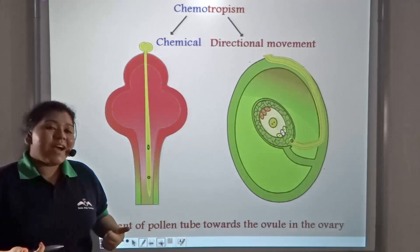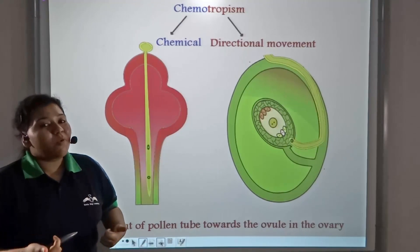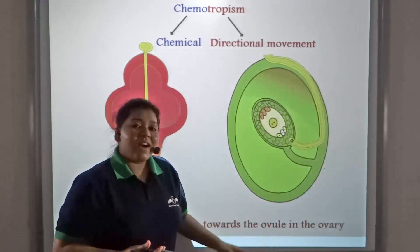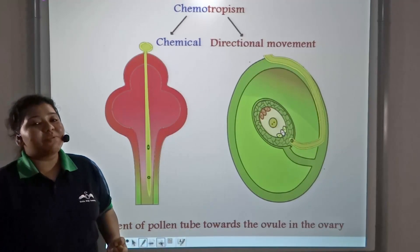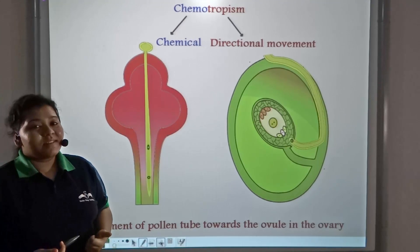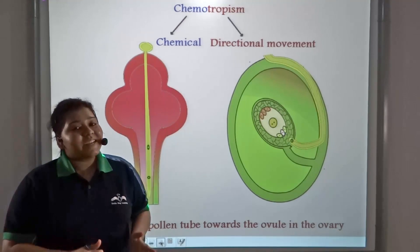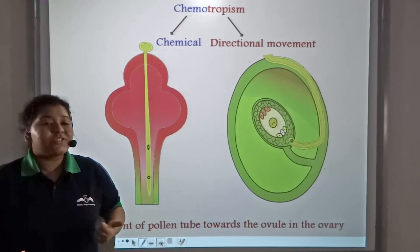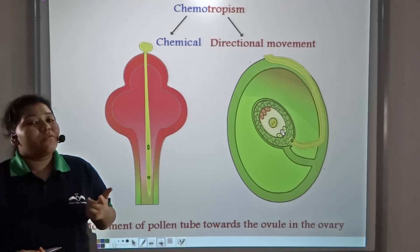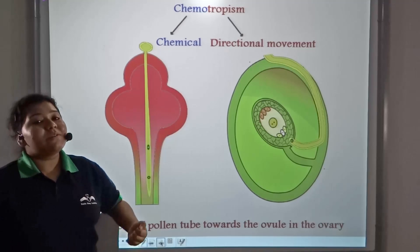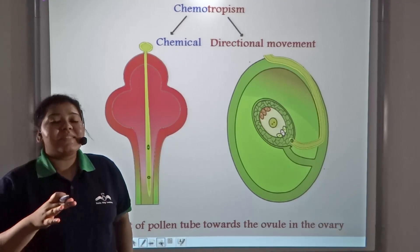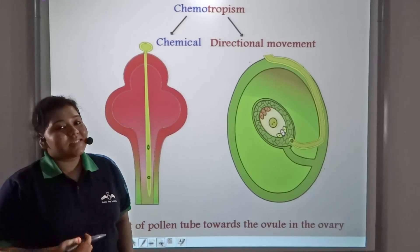After pollination, the ovary gives out a chemical which attracts the pollen tube towards itself. This kind of directional movement is not triggered by light, water, soil, or any other environmental factors, but because of a chemical that has been secreted by the plant itself.